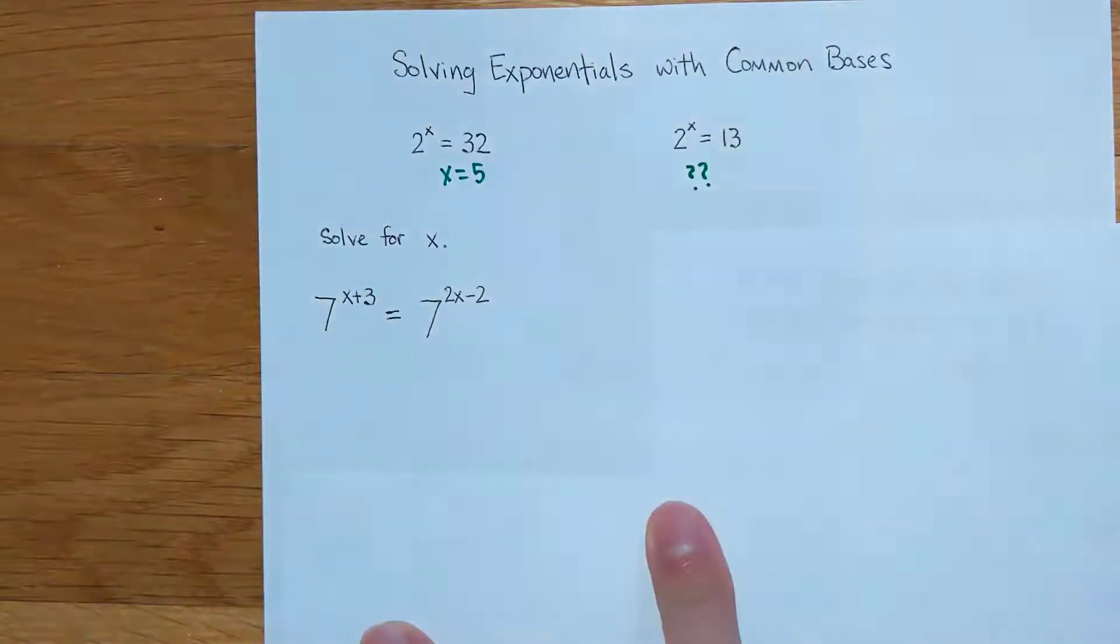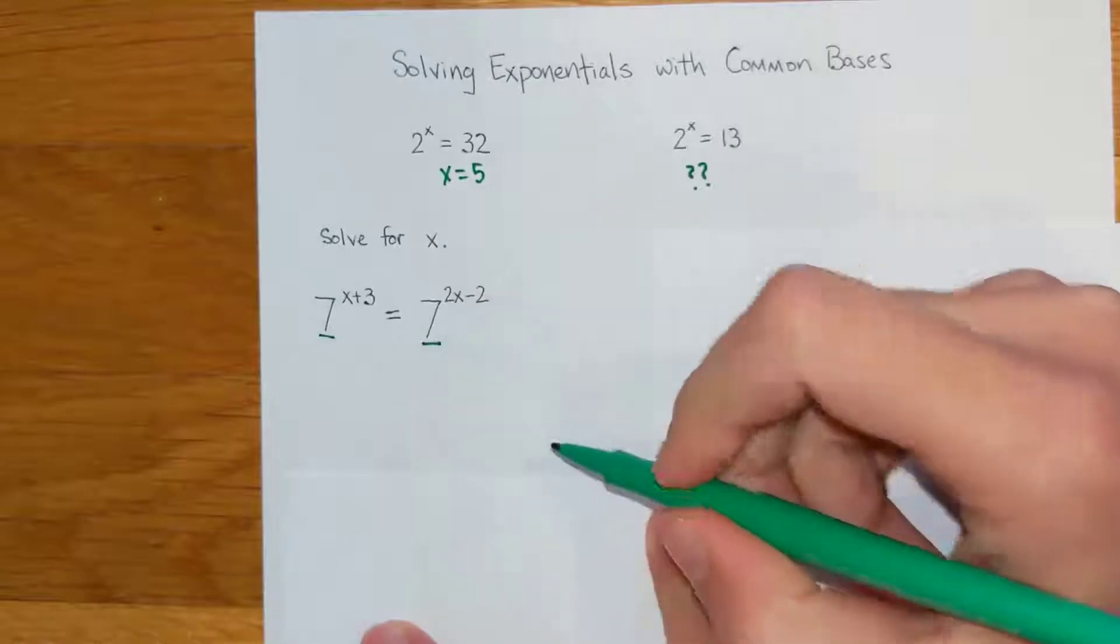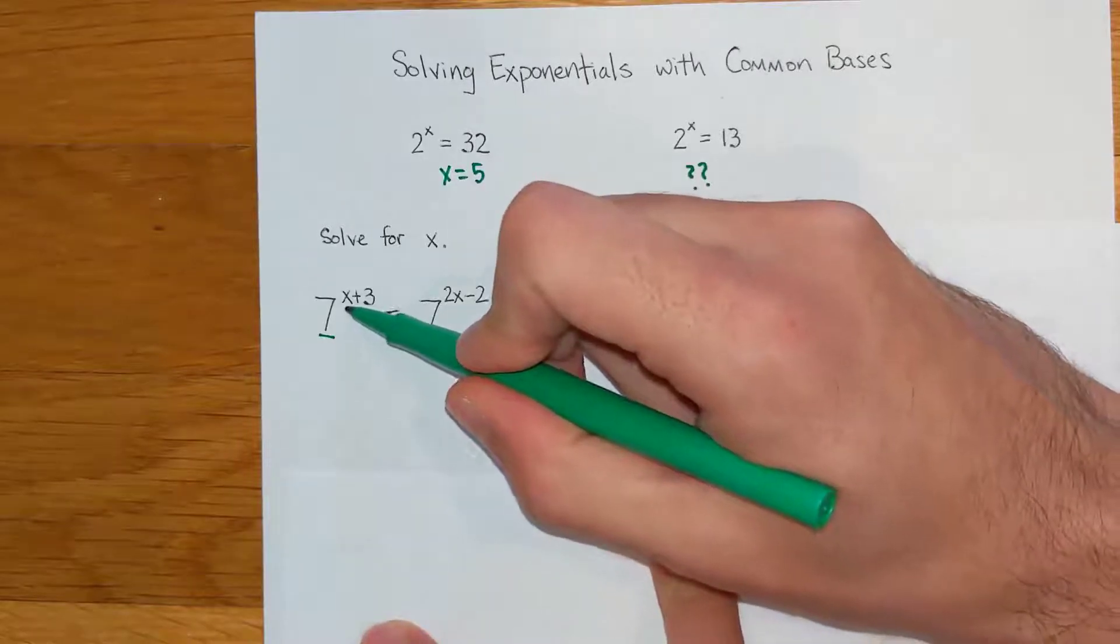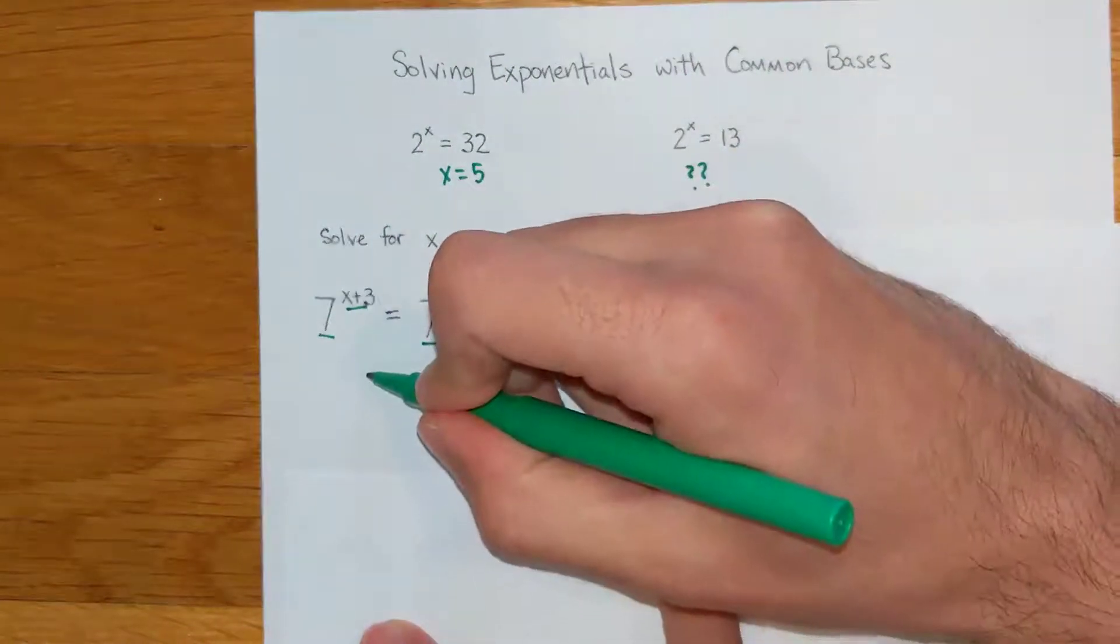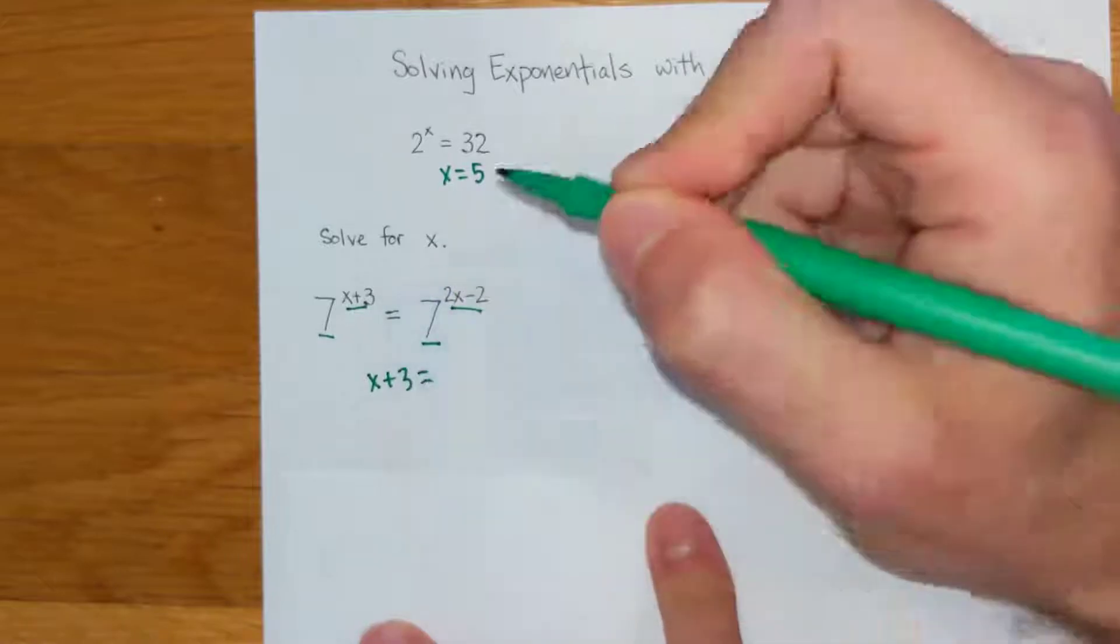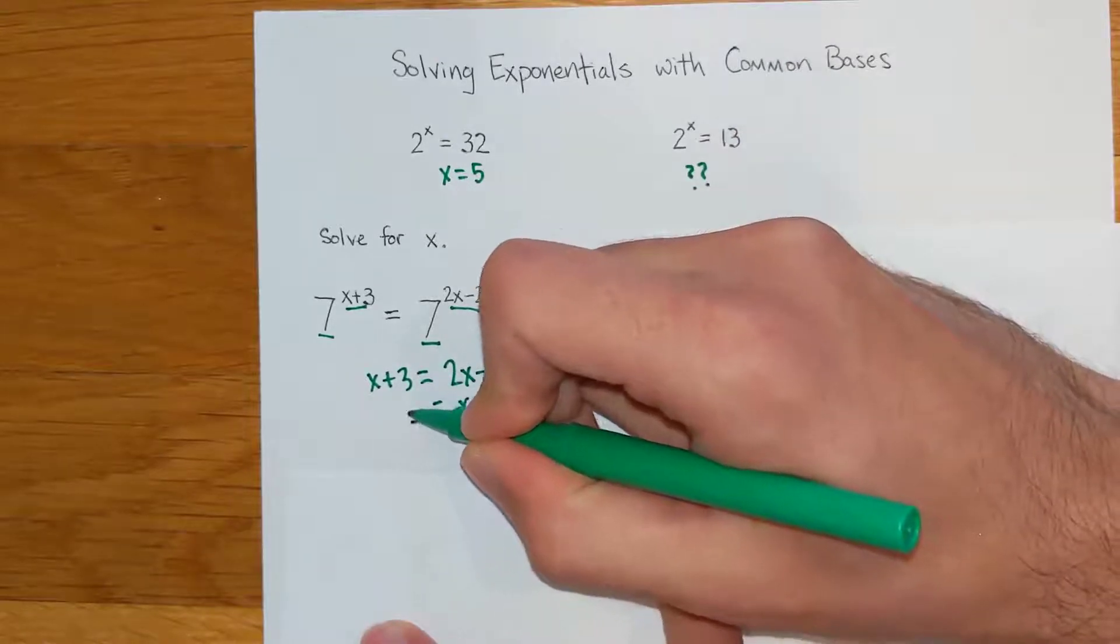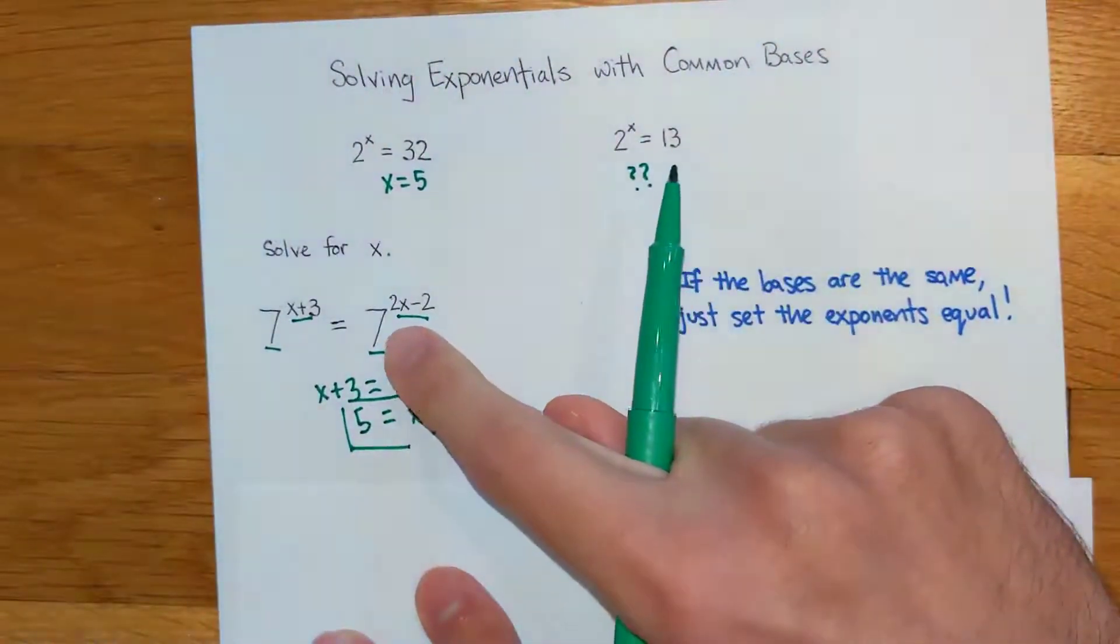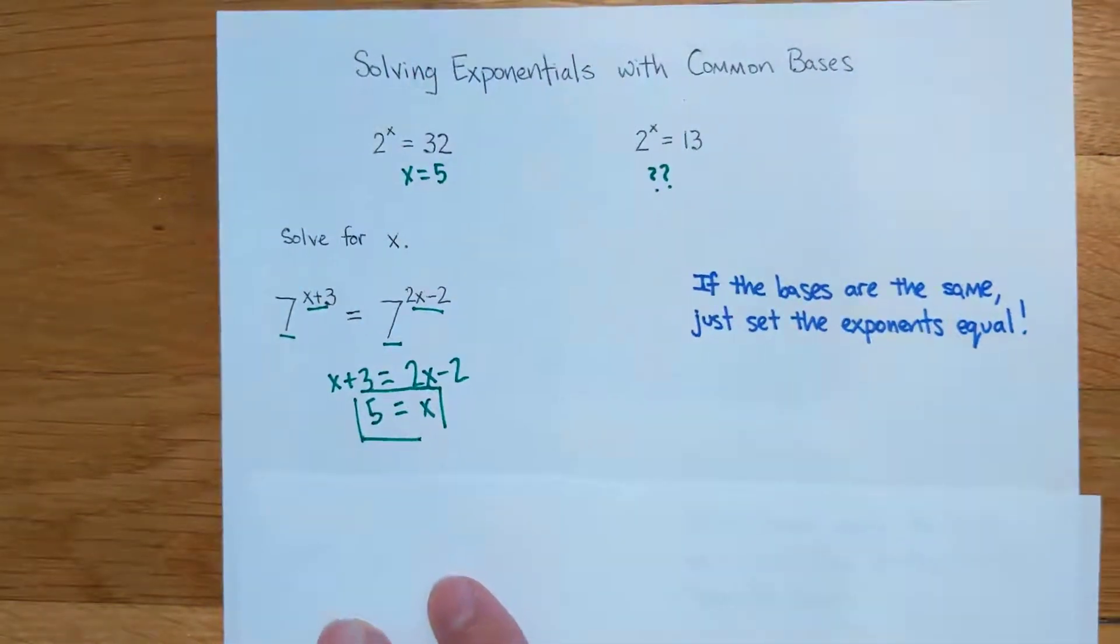An example problem would be like what you see right here. If you use a little bit of common sense on this first example, I have a 7 for my base over here and I have a 7 for my base over here. If these two sides are equal to each other, it means this exponent has to be the same as this exponent, otherwise the sides wouldn't be equal. So all you're going to do to solve this problem is just equal your exponents to each other, and then you're just doing regular math. You should get 5 for your answer. So if the bases are the same, they're both 7s, you just set the exponents equal, you solve for x that way and it's not too big of a deal.